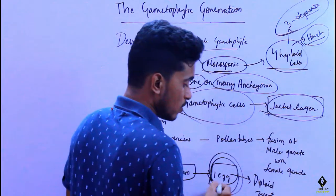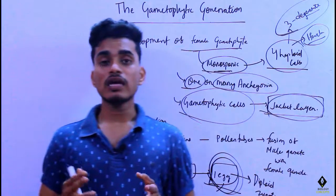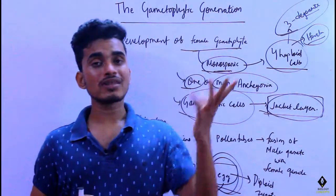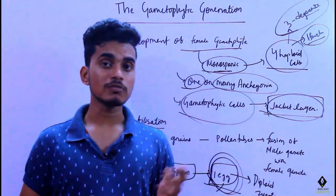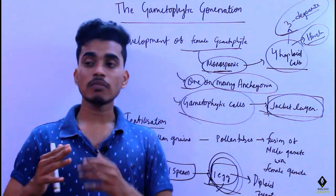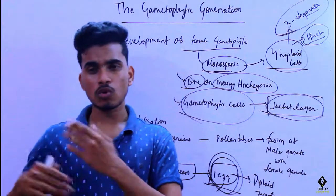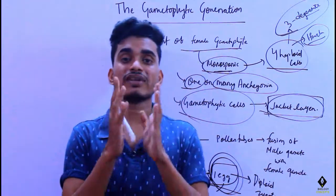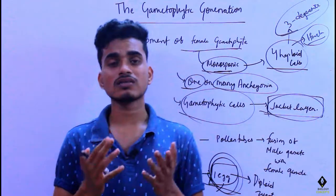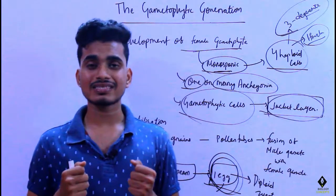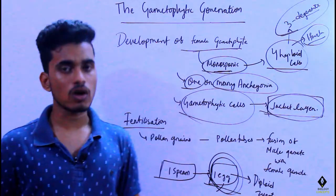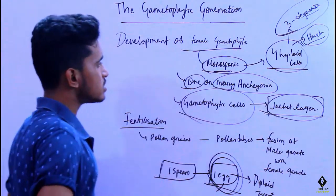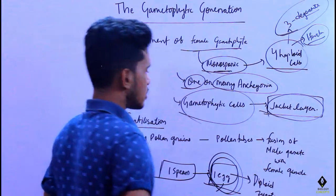When we discuss the life cycle of any gymnosperm species, we will go deeper into the function of the neck canal cell and the neck cell. For now, we need to understand that after fusion a diploid zygote is formed.